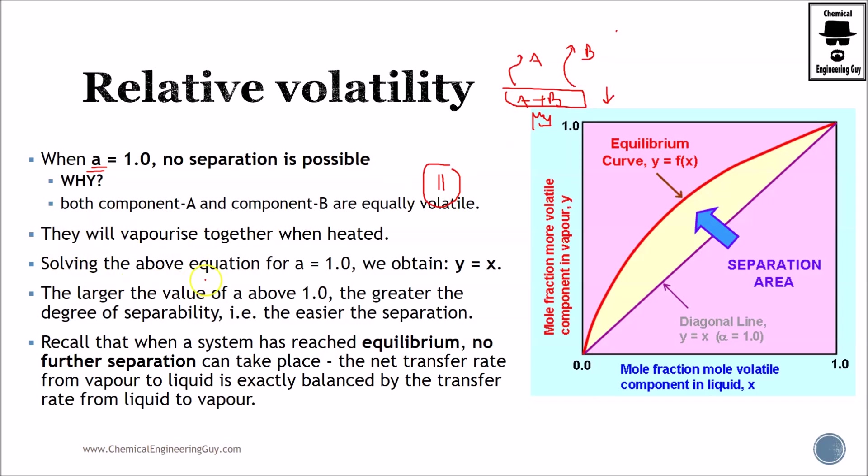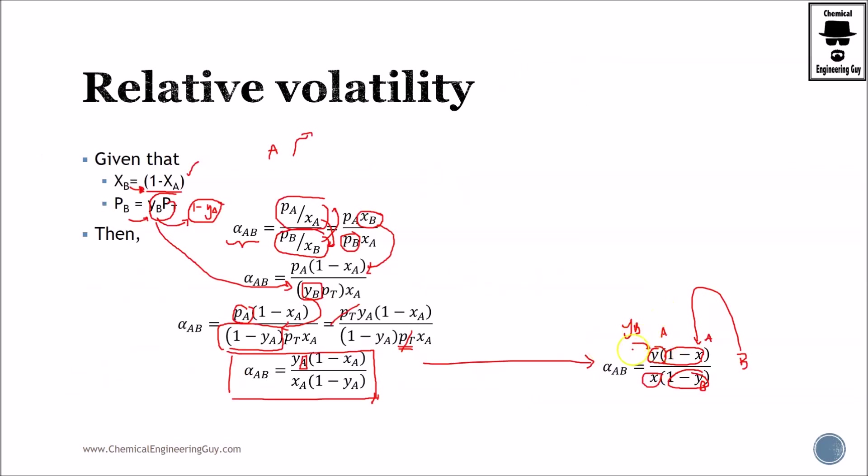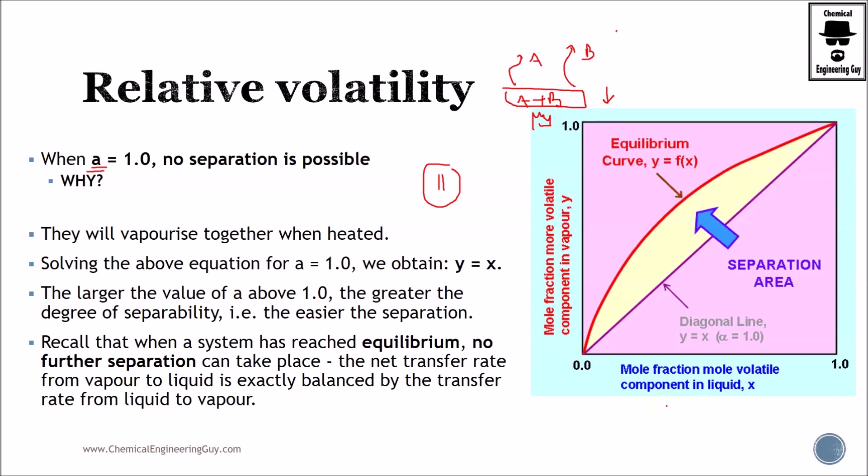If you wanted to solve this for one, you will see that if we pass this one right here, it will be x(1 minus y) equals y(1 minus x). Let's solve: x minus xy equals y minus xy. This is the same part, so x equals y. The main problem is that the driving force is now zero. There is no change in volatility, there will be no mass transfer in this case. The net transfer will be zero. Maybe you have some A going here but you will also have some B going backwards as well, so the total rate will be equal to zero.